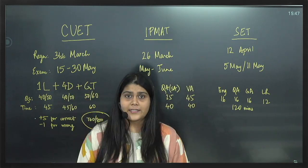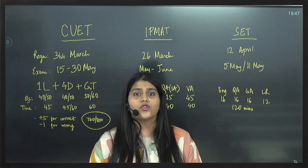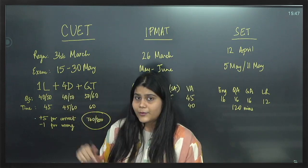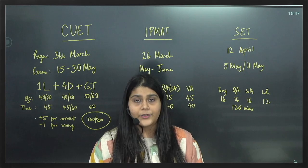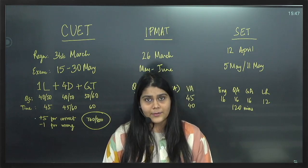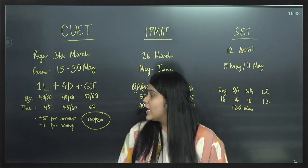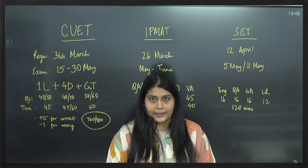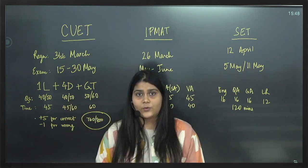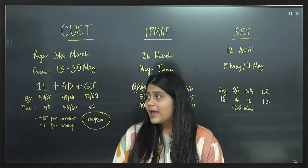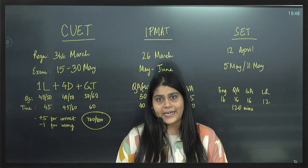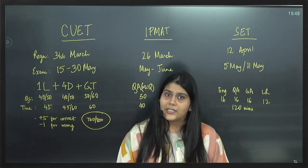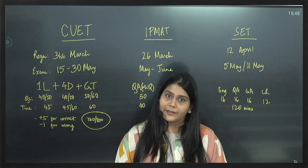The first section is the language section. You can choose any languages out of the 13 languages offered. It is recommended that you go for one language because as a whole you can appear for a maximum of 6 exams in the CUET series. The language section will have 50 MCQs out of which you will have to attempt 40, with 45 minutes to complete that section. For every correct answer you get plus 5 and for every wrong answer there is negative marking of minus 1.